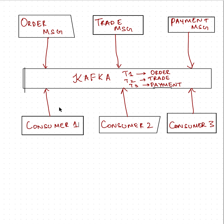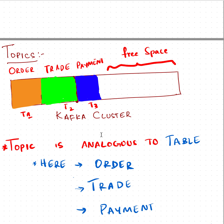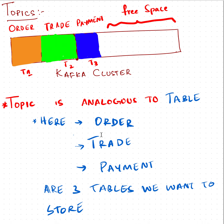Once you need information, for example consumer one needs to consume order-related information, it could connect to the specific topic called 'order' and consume the data. It could also subscribe to multiple topics, consolidate the data, and write it to a persistent system or write it back to Kafka itself. For example, an order event consumer consumes orders based on order IDs and stores it back into Kafka after performing some level of transformations or cleaning. Consumer two could be a trade consumer and consumer three could be a payment consumer.